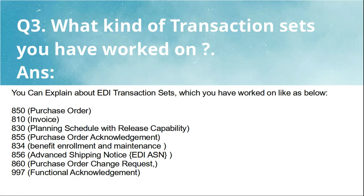The next question is: what kind of transaction sets have you worked on? You can explain which EDI transaction sets you have worked on. The most important EDI transaction sets are: 850 for purchase order, 810 for invoice, 830 for planning schedule and release capability, 855 for purchase order acknowledgement, 834 for benefit enrollment and maintenance, 856 for advance shipping notice (ASN), 860 for purchase order change request, and 997 for functional acknowledgement.